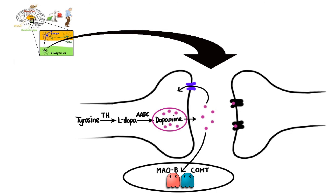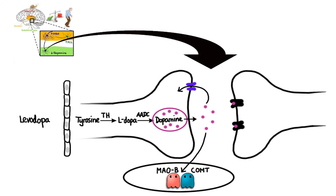Now let's discuss drugs used in the treatment of Parkinson's disease, starting with one of the most commonly used: levodopa. You may wonder why use the precursor of dopamine instead of dopamine itself. The answer is the blood-brain barrier — a tightly packed layer of endothelial cells that restricts free access of molecules between the blood and the brain. Dopamine cannot freely pass through this barrier; however, levodopa can, with a little bit of help.